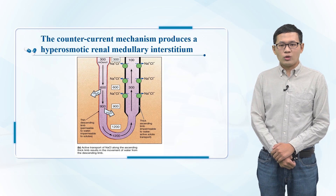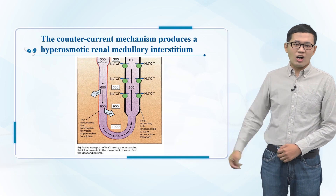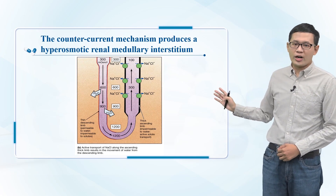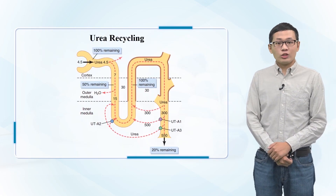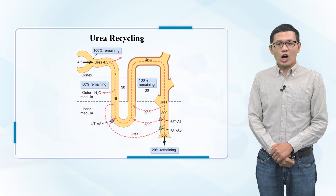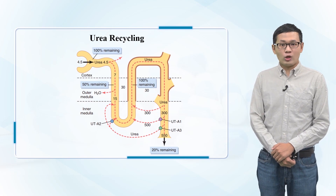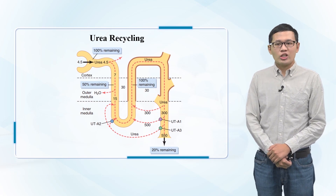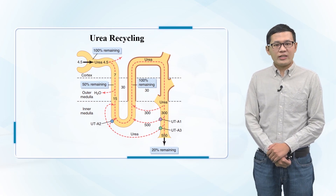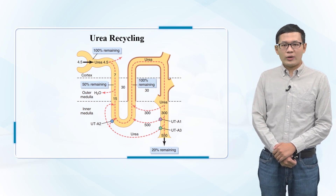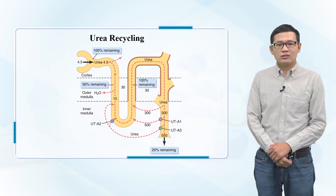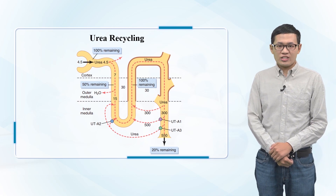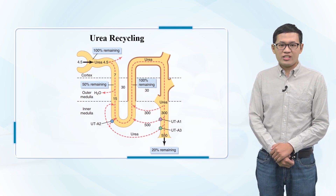Let's watch a video to see how the loop of Henle works. Besides, urea recycling also plays an important role, even though we think of urea as a waste product. The kidneys actually need it.